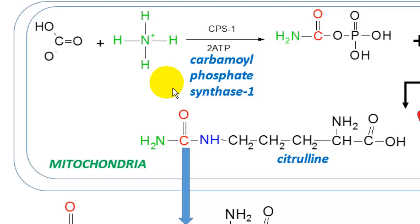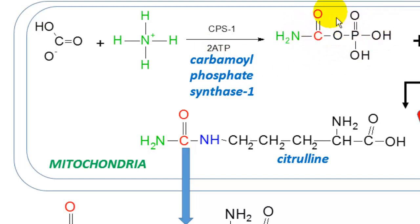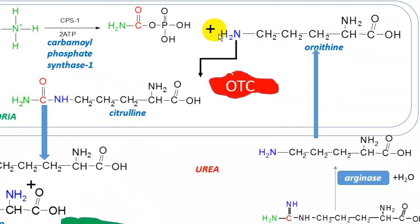CPS1 should not be confused with the cytoplasmic form CPS2, which is involved in the generation of cytosine, uracil, and thiamine — the pyrimidine biosynthesis pathway. CPS1 is sequestered in the mitochondrial matrix and utilizes two ATP molecules to generate carbamoyl phosphate. This primed molecule will then react with the next metabolite in the urea cycle: ornithine.